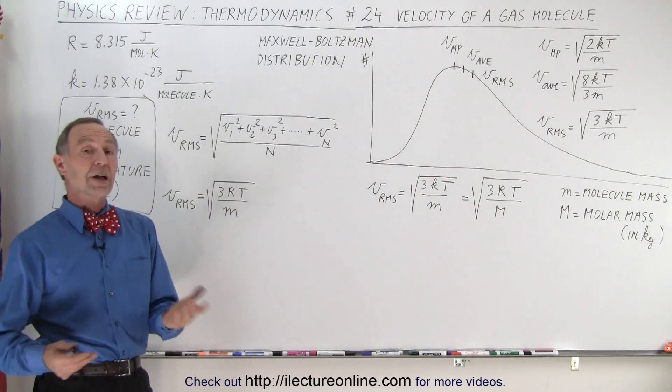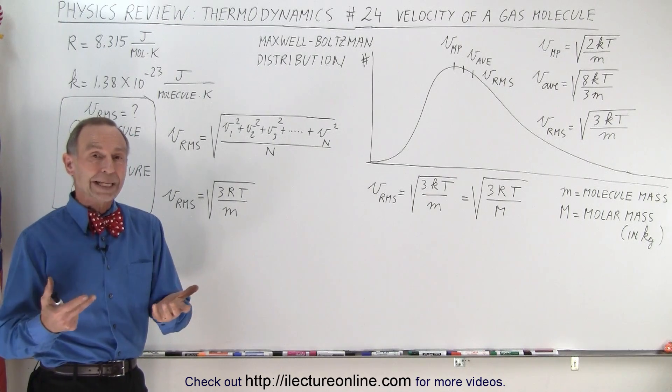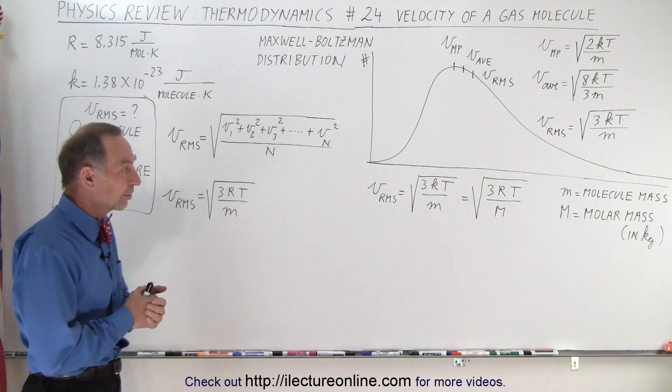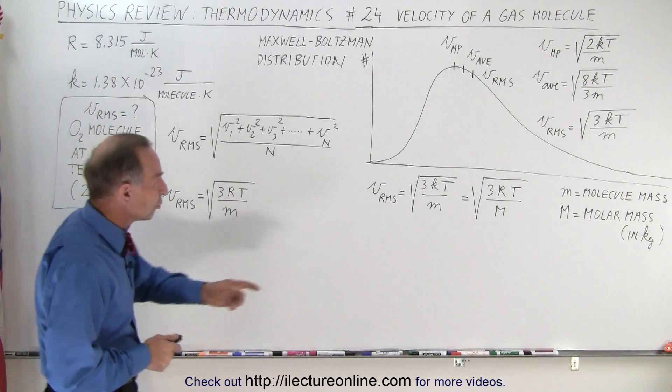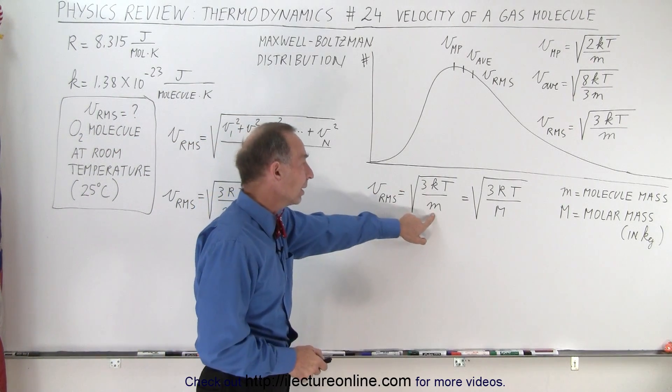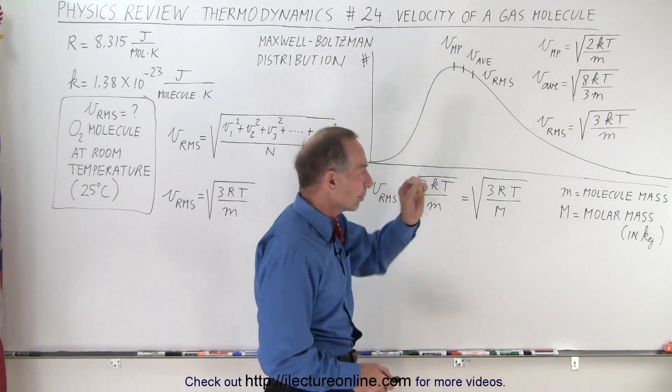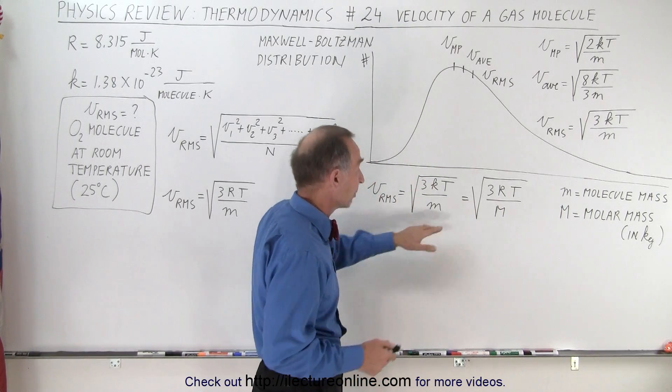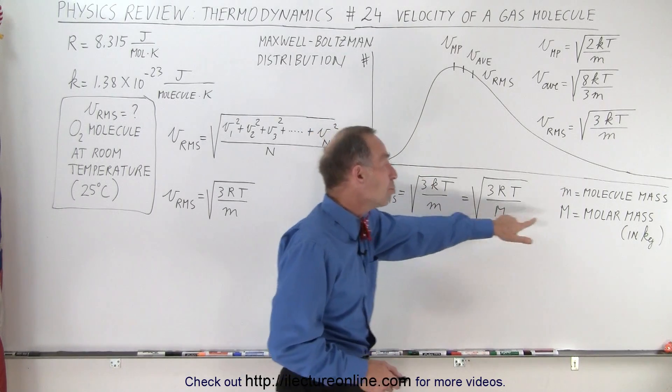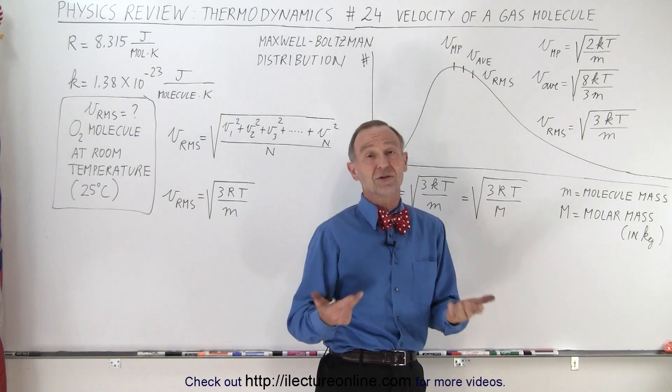So now we're ready to calculate the velocity of an oxygen molecule in the air, the root mean square velocity. We can use the square root of 3kT over m, where little m is the molecular mass, and big M is the molar mass. Since the molar mass is easier to obtain, I like this equation better.